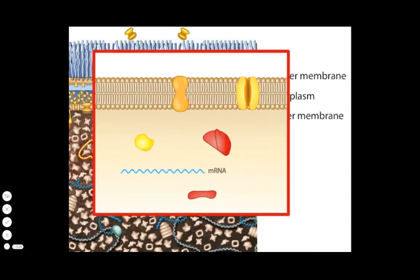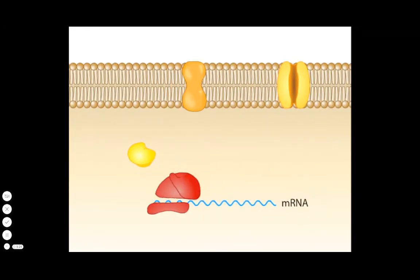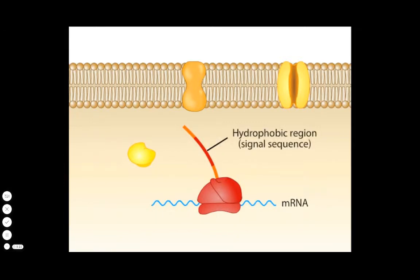Let's examine how proteins are delivered to the inner membrane. As a ribosome translates a protein destined for the inner membrane, the first part of the protein to emerge from the ribosome tunnel is a very hydrophobic region called a signal sequence.